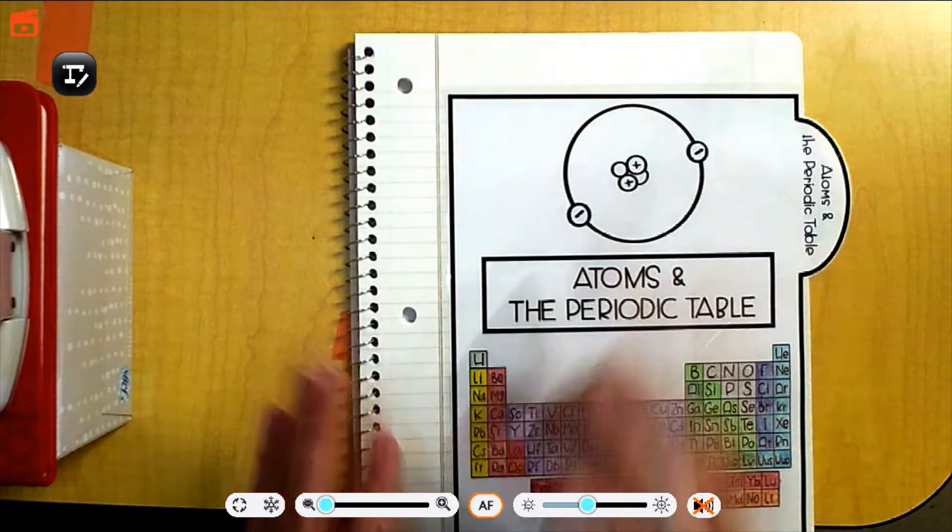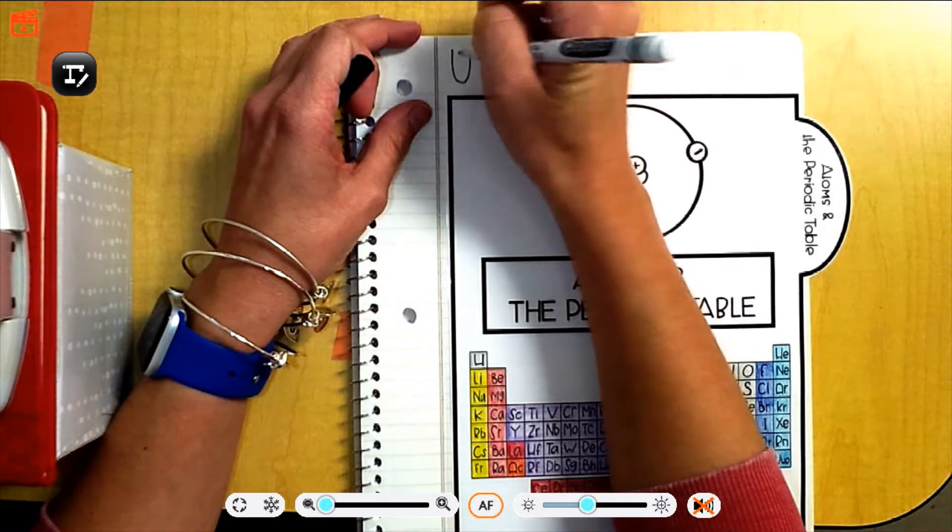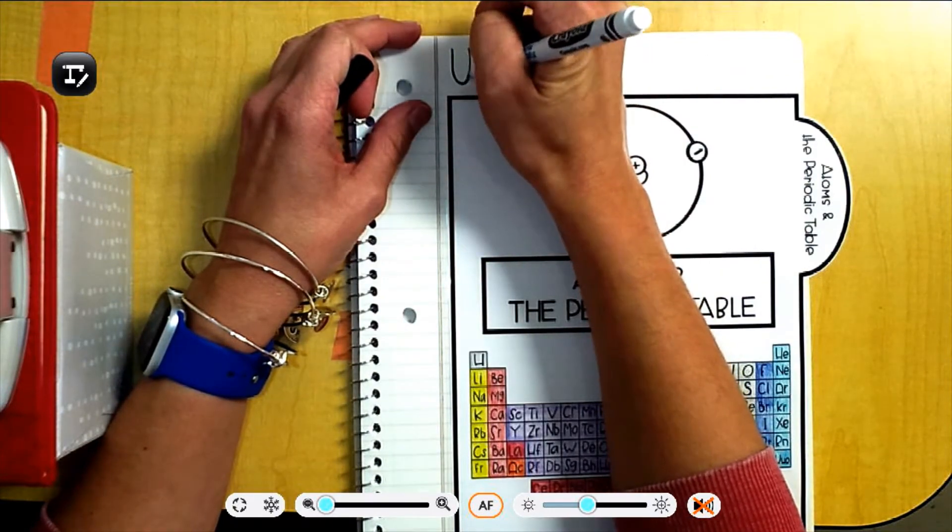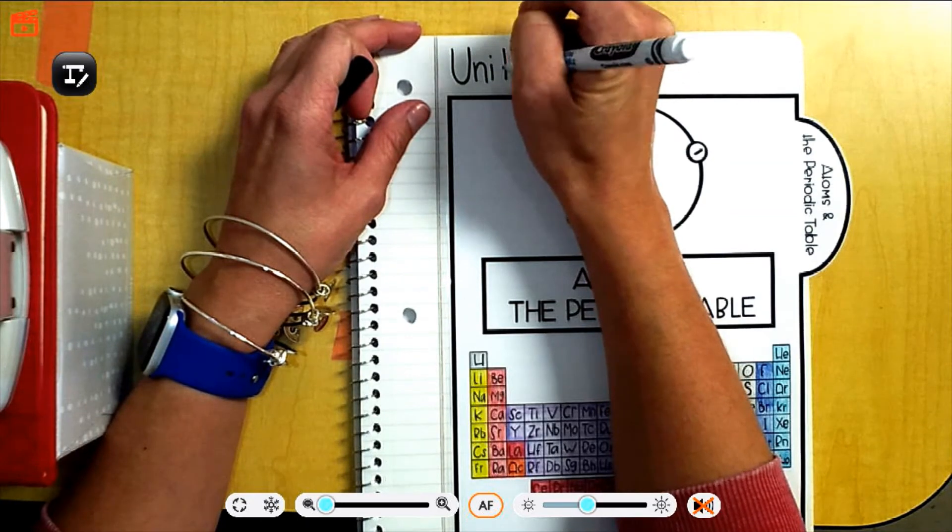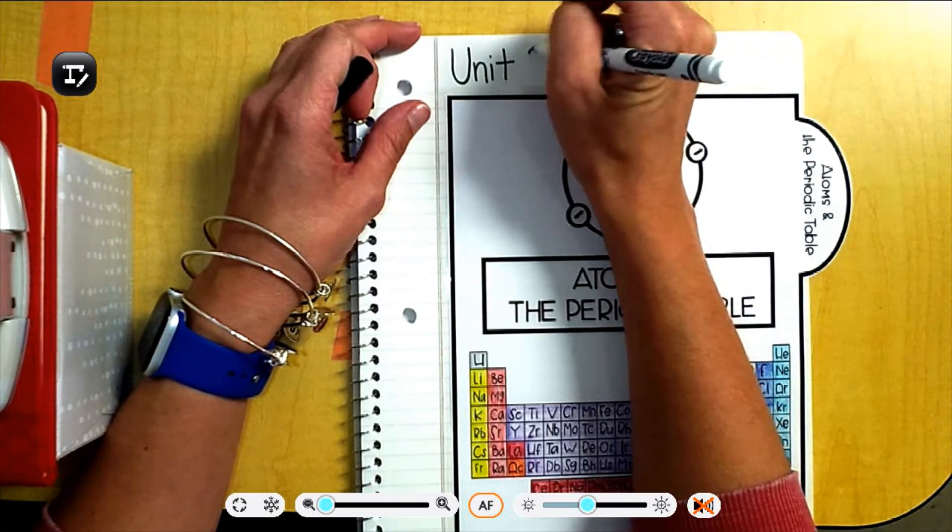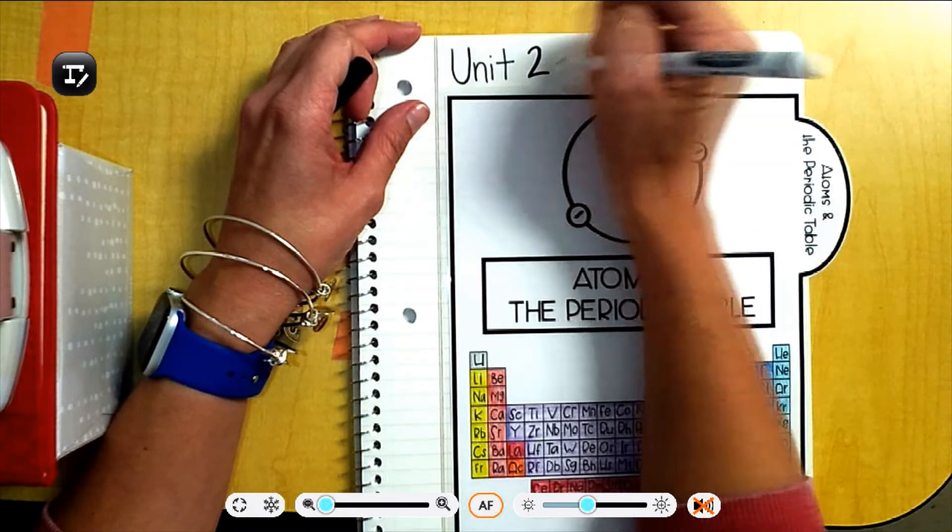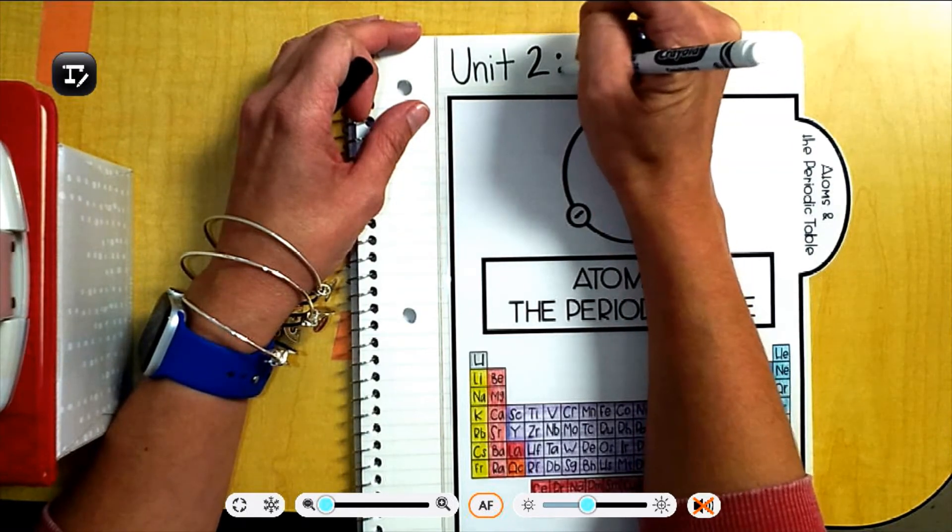you're going to go at the top of your notebook. And you're going to write that this is unit, I'm going to get a better marker, unit two. Unit two.